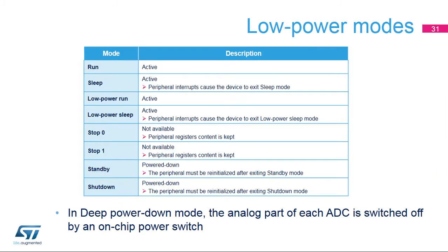The ADCs are active in run, sleep, low-power run, and low-power sleep modes. In stop-zero or stop-one mode, the ADCs are not available but the contents of their registers are kept. In standby or shutdown mode, the ADCs are powered down and must be reinitialized when returning to a higher power state. There is a deep power down mode in each ADC itself which reduces leakage by turning off an on-chip power switch; this is the recommended mode whenever an ADC is not used.